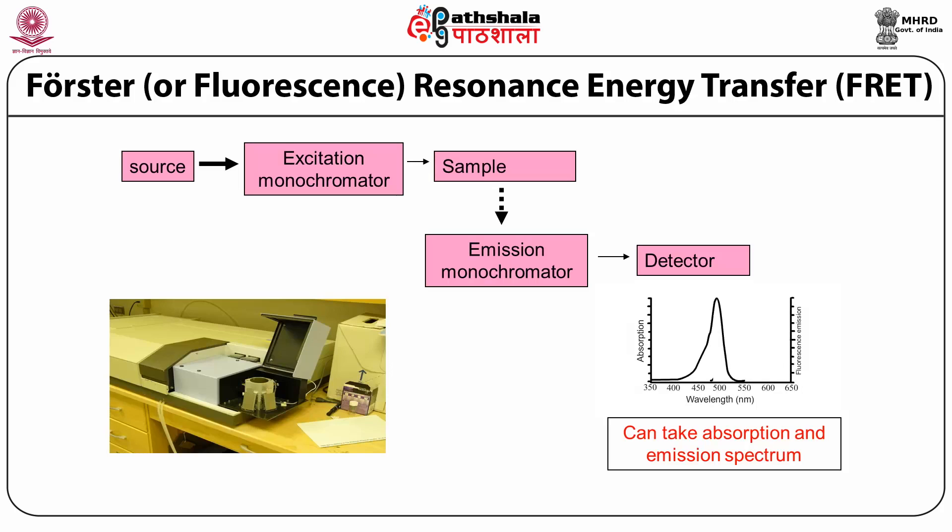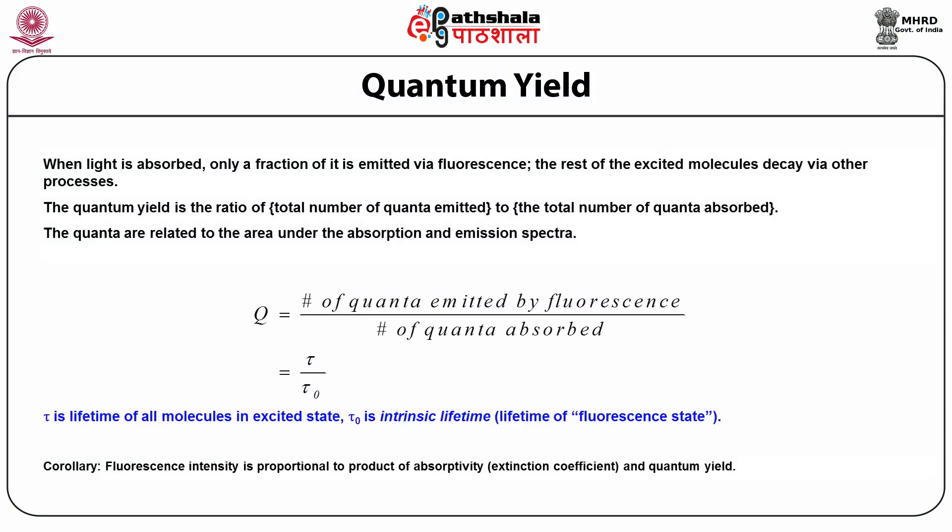We discuss quantum yield. When light is absorbed, only a fraction of it is emitted via fluorescence; the rest of the excited molecules decay via other processes. Quantum yield is defined as the ratio of total number of quanta emitted to total quanta absorbed, represented as Q equals quanta emitted by fluorescence divided by quanta absorbed, or tau divided by tau-naught, where tau is the lifetime of all molecules in the excited state and tau-naught is the intrinsic lifetime.